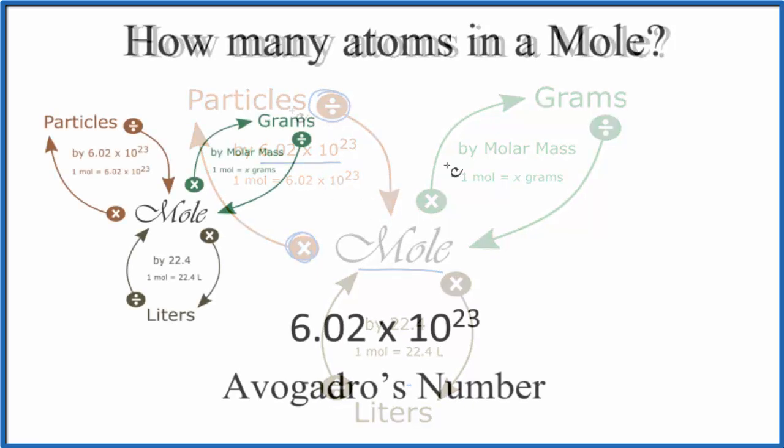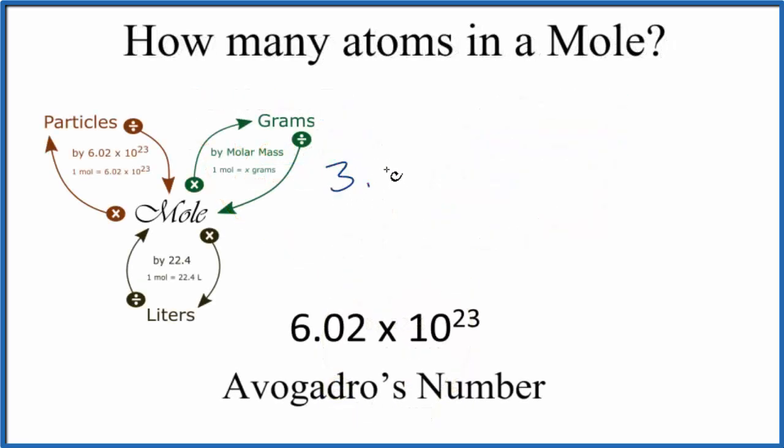Let's try it. So I have 3.01 times 10 to the 23rd atoms of sodium, and I want to know how many moles I have. So we said if we're going from particles, like atoms, like our sodium atoms, to moles, we'll divide by Avogadro's number.